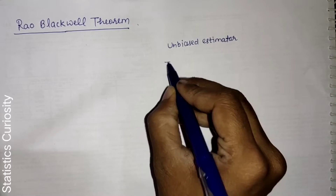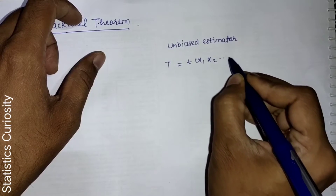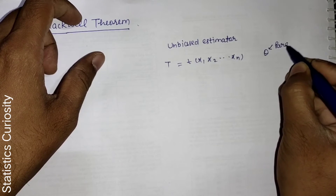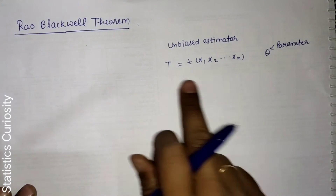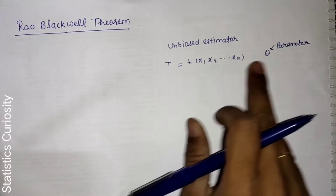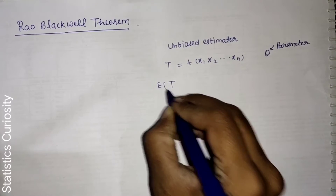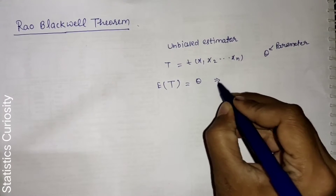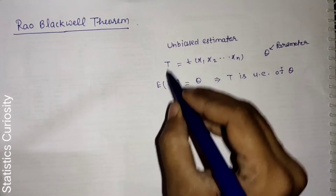The first term is unbiased estimator. Let T be a function of random sample X1, X2, up to Xn. We need to estimate a population parameter theta. T is an estimator — a function of sample values. If the expected value of T equals theta, i.e., E(T) = theta, then T is called an unbiased estimator of theta.